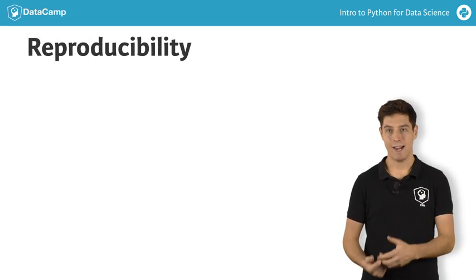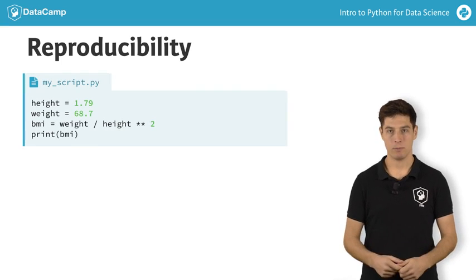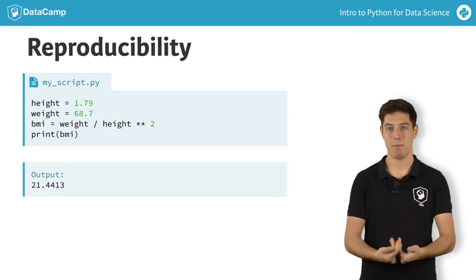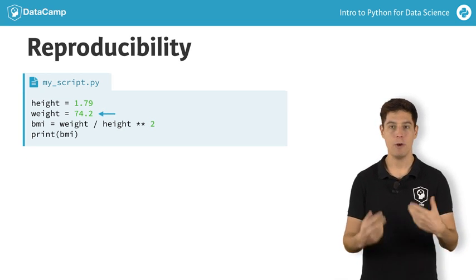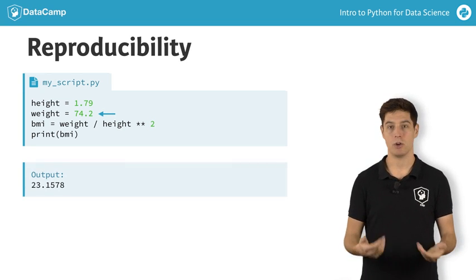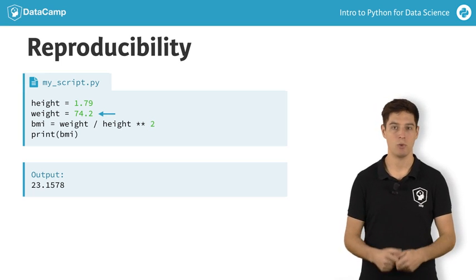Suppose the code to create the height, weight and BMI variables are in a script, like this. If you now want to recalculate the BMI for another weight, you can simply change the declaration of the weight variable and rerun the script. The BMI changes accordingly because the value of the variable weight has changed as well.